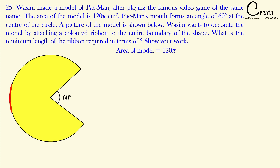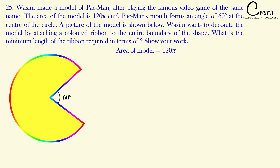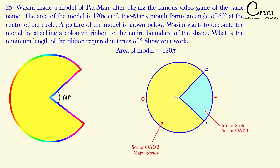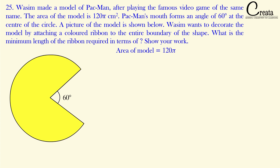Washim wants to decorate this model by attaching a colored ribbon on the boundary of the Pac-Man shape figure. We have to calculate the length of the ribbon required — basically the complete length of the boundary. Can you observe the model as a circle with a major sector and a minor sector? This is the minor sector and this is the major sector.